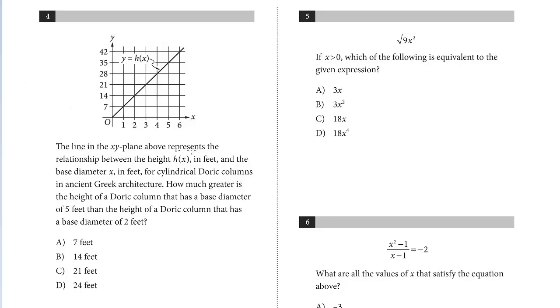The line in the xy-plane above represents the relationship between the height h of x in feet and the base diameter x in feet for cylindrical Doric columns in ancient Greek architecture. How much greater is the height of a Doric column that has a base diameter of 5 feet than the height of a Doric column that has a base diameter of 2 feet?